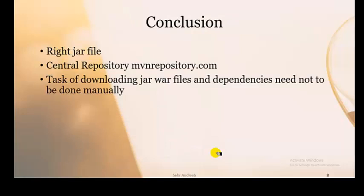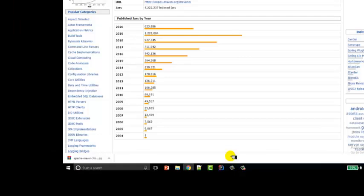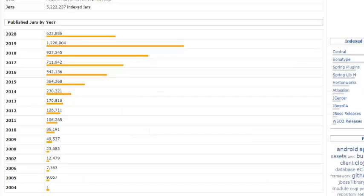The conclusion we draw: you can get the right jar file from the Maven repository. It is a central repository and mvnrepository.com is its location. The task of downloading jar and war files and dependencies need not be done manually — it is auto done. If you need any jar file or dependency, you do not do it manually. It automatically does all the things. You can see that published jars have grown by year — in 2004 there was only one jar, and now there are a lot of jar files available from the central repository.